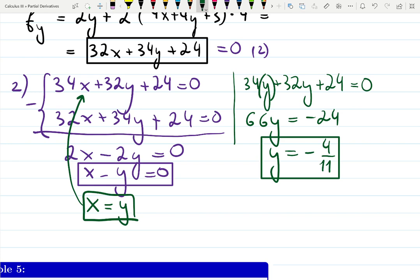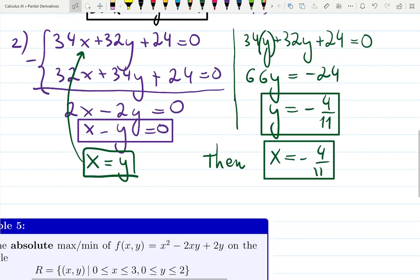If y is this, then x also has to be the same thing, because we just found that x and y are the same. So x is also -4 over 11. We have a point: x, y equals (-4/11, -4/11).